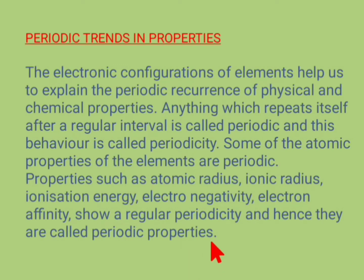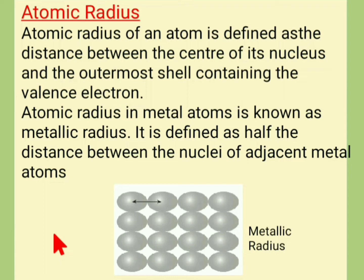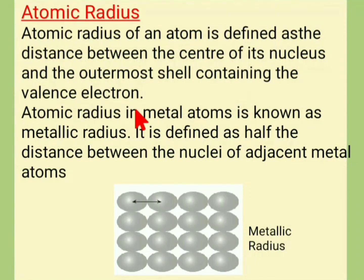The first periodic property is atomic radius. Atomic radius of an atom is defined as the distance between the center of the nucleus and the outermost shell containing the valence electrons. For metals such as calcium, magnesium, and sodium, the atomic radius is known as the metallic radius. It is defined as half the distance between the nuclei of adjacent atoms in a metal.